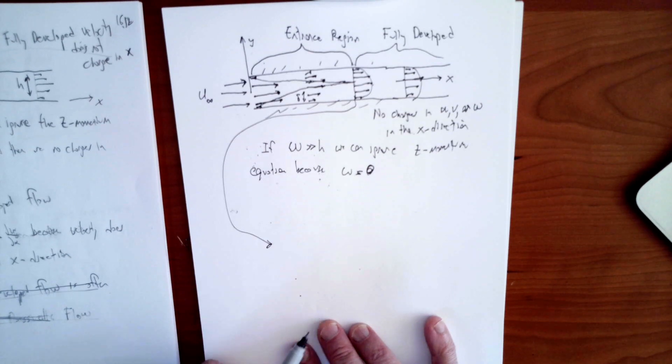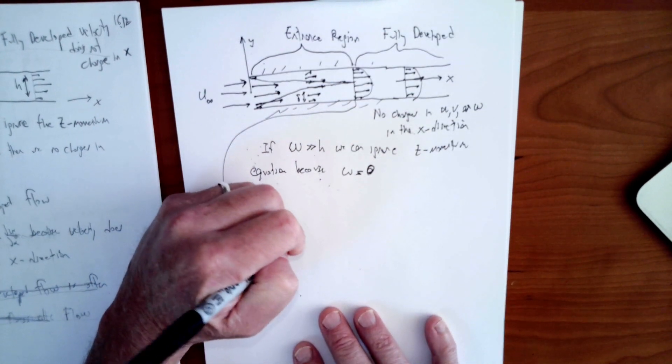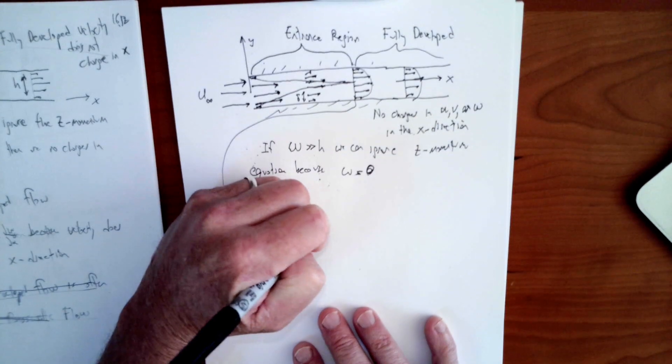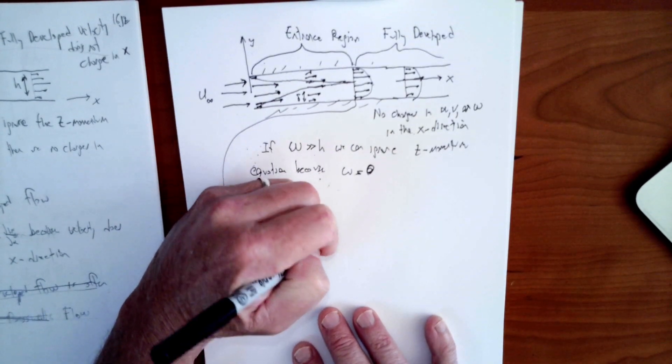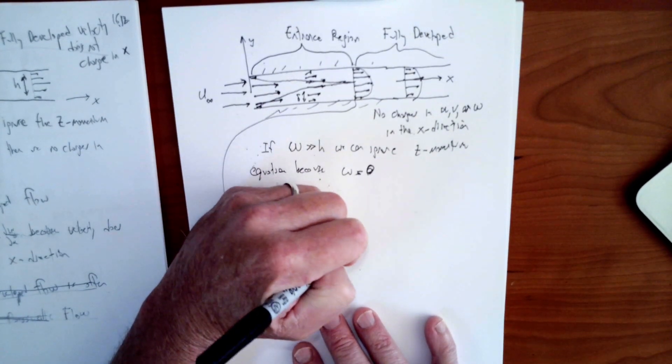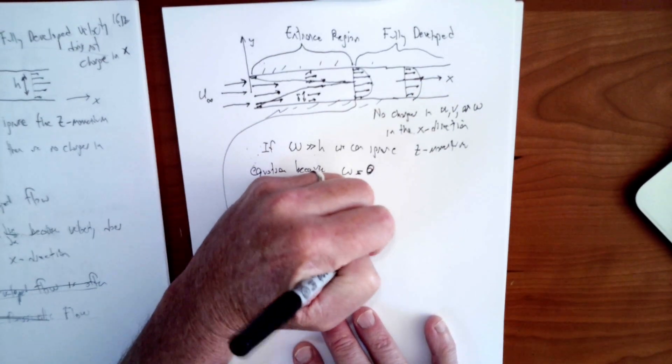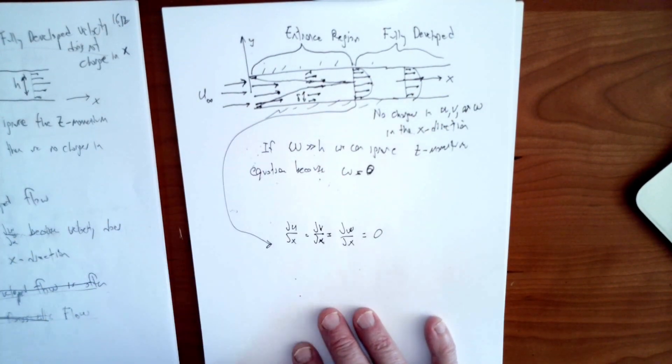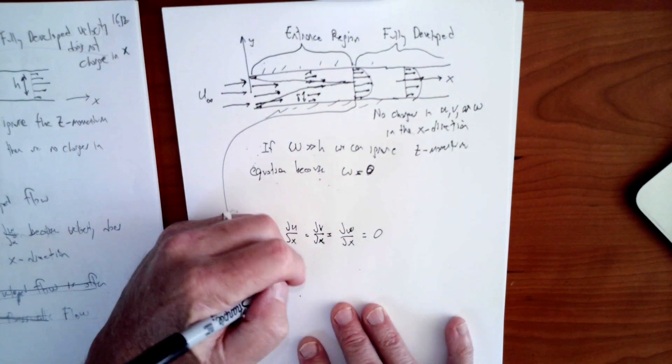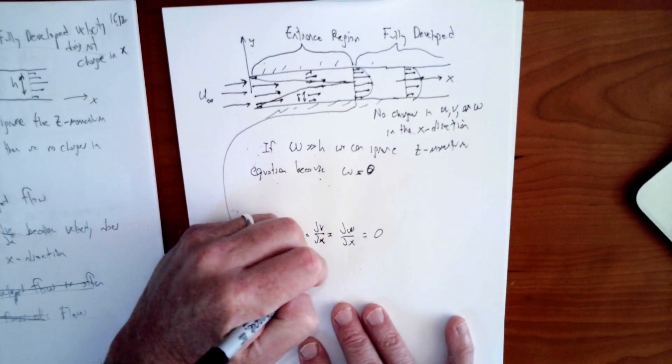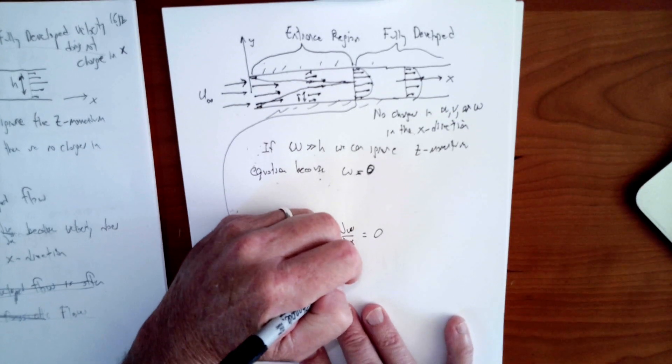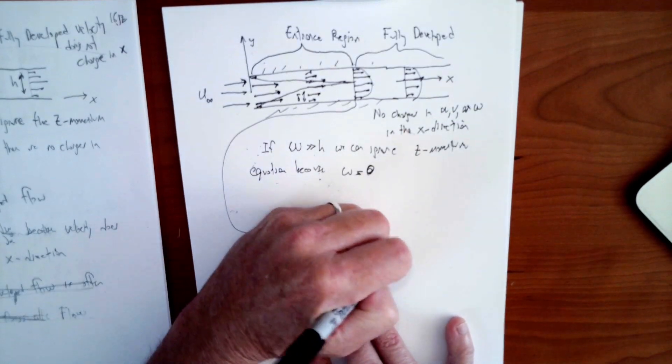We're also going to say that because it's fully developed, du/dx is equal to dv/dx is equal to dw/dx. Well, we already said w is zero, but anyway. That's all going to equal zero because there are no further velocity changes in x direction. No velocity changes in x.